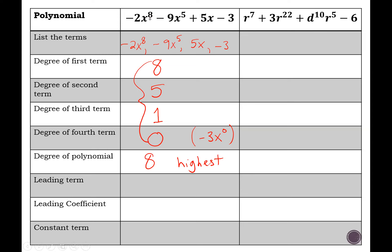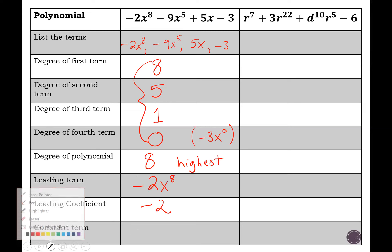The leading term: notice how these terms are in order from highest degree to lowest. The one with the highest degree, negative 2x to the eighth, happens to be written first, but even if it wasn't written first, it would still be called the leading term. The leading coefficient — the number in front — is negative 2. And finally, the constant term is the term that doesn't have a variable, which is negative 3.